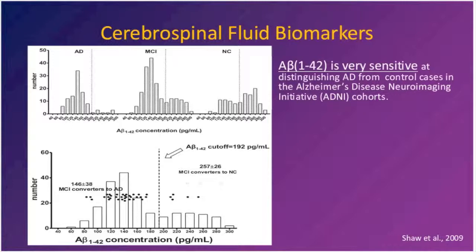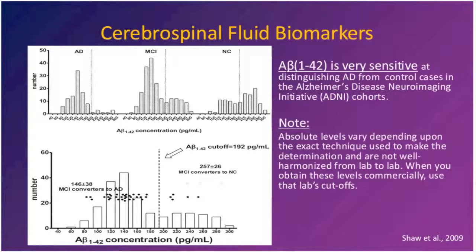A-beta is very sensitive, but the absolute levels vary according to the exact technique used. One thing to be careful about is that Athena is currently the dominant source of clinical measurements of A-beta. When CSF samples are sent to different labs, measurements are not easily comparable from one lab to another. The cutoff used by Athena is somewhat higher than that used in the Alzheimer's Disease Neuroimaging Initiative, so you can't take these values as any kind of gold standard.